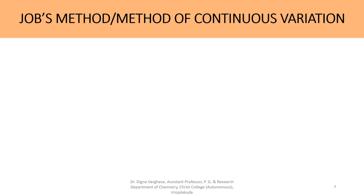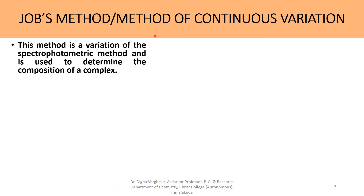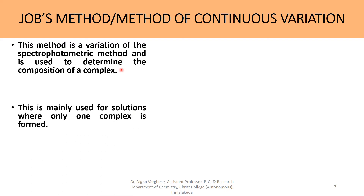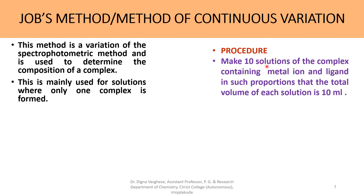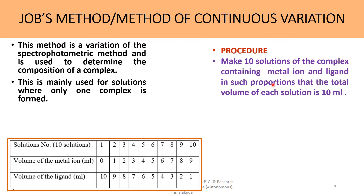The next method is Job's method, also called the method of continuous variation — a spectrophotometric method. This method is a variation of the spectrophotometric method and is used to determine the complex composition. It is mainly used for solutions where only one complex is formed. The first step is to make 10 solutions of the complex containing metal ion and ligand in such proportions that the total volume of each solution is 10 ml.